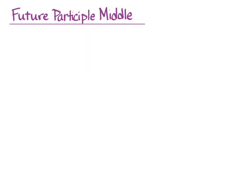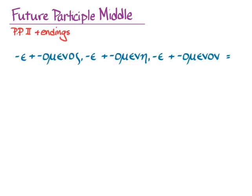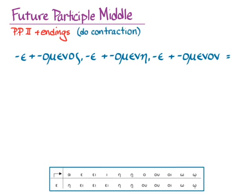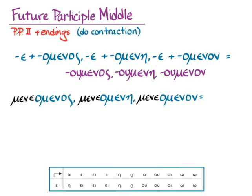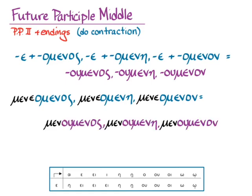That just leaves the future participle middle. Same rules: second principal part plus the participle endings, which means combining that epsilon with the endings — umenos, umenē, umenon. With our hidden stem from the second principal part, that becomes mene- + umenos, mene- + umenē, mene- + umenon. But we need to contract them and do the accent process — remember to put the accent on the uncontracted form and then make sure that accent stays where it belongs on the contracted form. And so we get: menumenos, menumenē, menumenon.